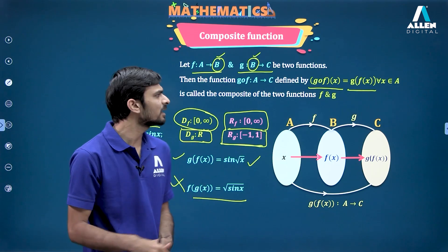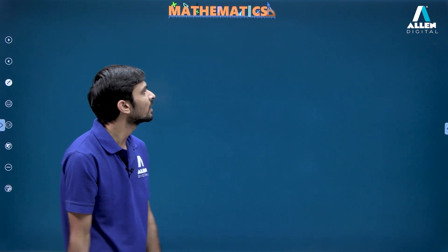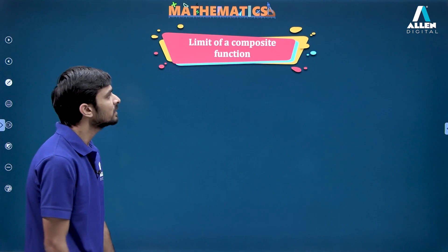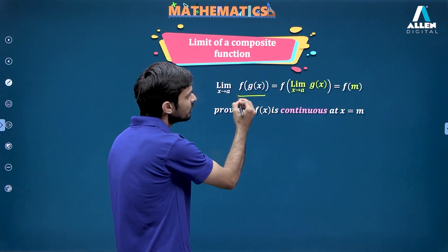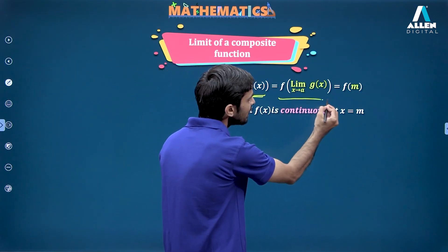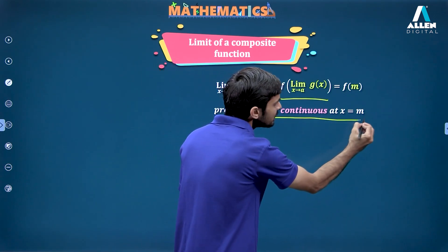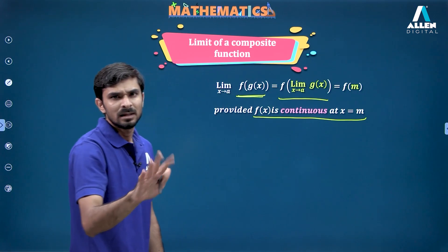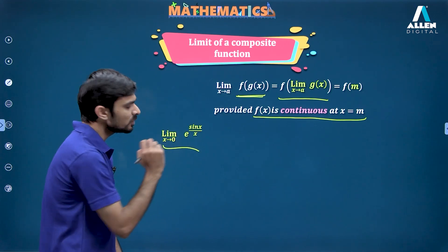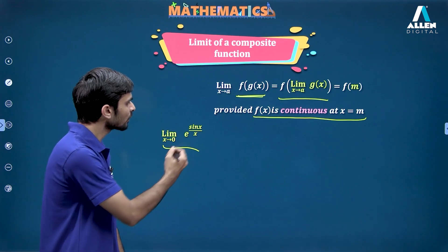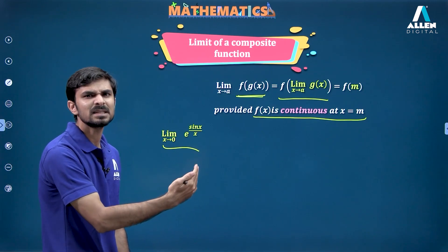Now, if we have a proper understanding of composite functions, we can look into how to find their limit. For limits of a composite function: if we are finding limit x→a of f(g(x)), I can write it as f(limit x→a g(x)) only when f(x) is continuous at that particular value. For example, limit x→0 of e^(sin x/x): for x→0, sin x/x = 1 and e is continuous at 1.